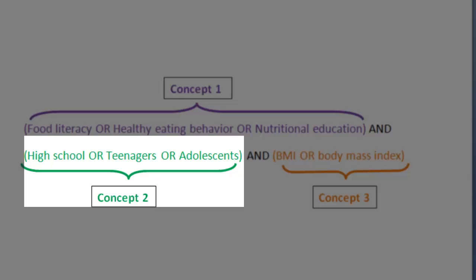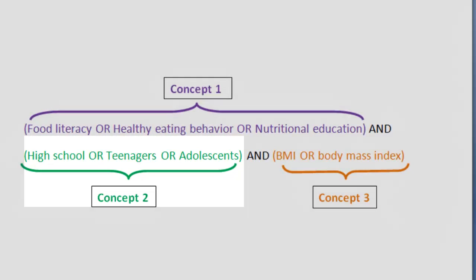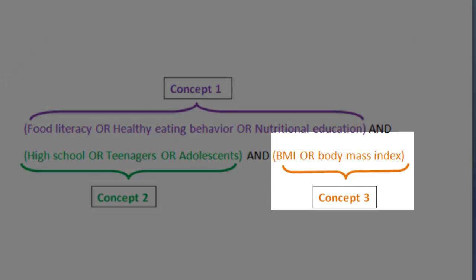Concept 2 is about high school students, but we could also describe this group as teenagers or adolescents. So we have gathered these words together in brackets as well. Concept 3 is about BMI, both as an acronym and fully spelled out.